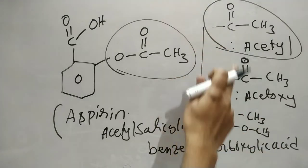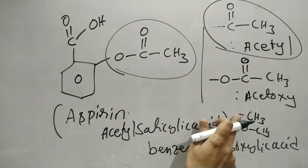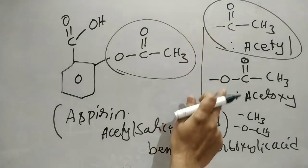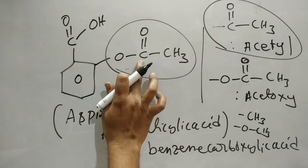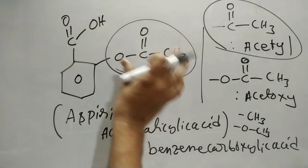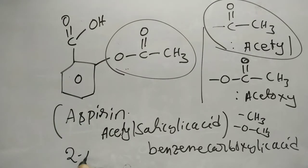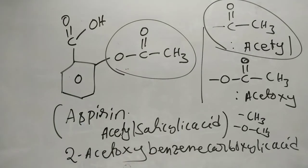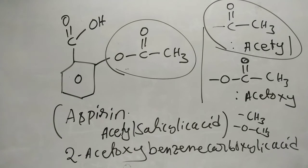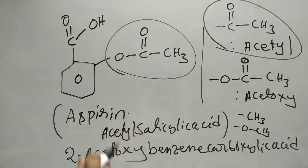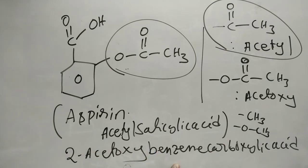Similarly, just as methyl gives methoxy, acetyl gives acetoxy. So the substituent at position two is called an acetoxy group. Therefore, the IUPAC name of aspirin is 2-acetoxybenzoic acid, also written as 2-acetoxy benzene carboxylic acid.